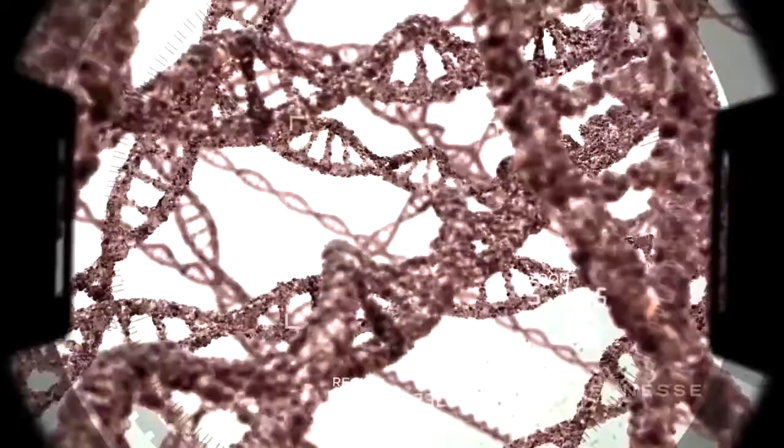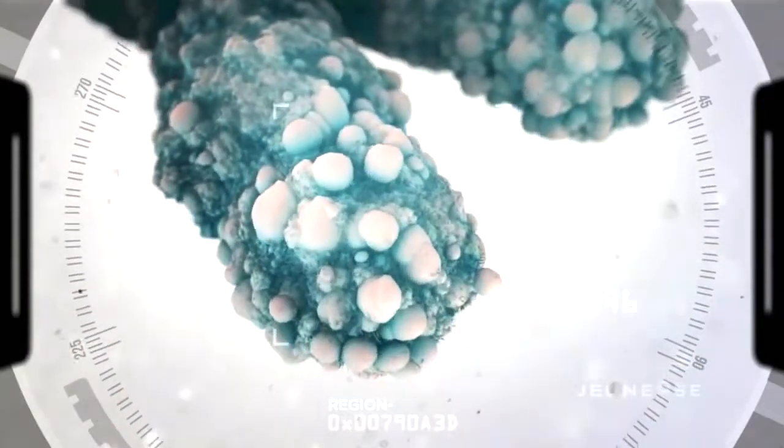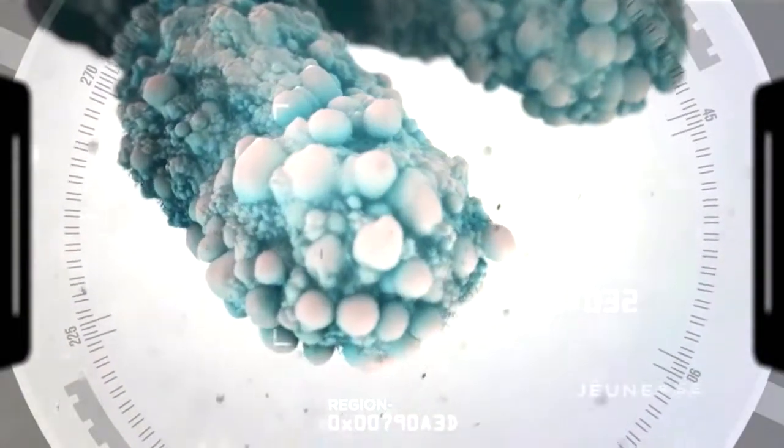The answer cannot be seen by the human eye and is something called a telomere. Telomeres are made of repetitive DNA sequences that become the protective caps or ends of our chromosomes. Their duty is to protect our DNA.